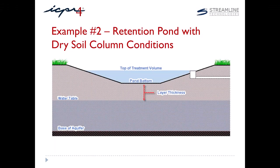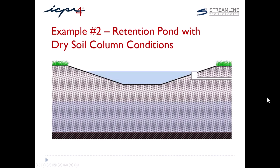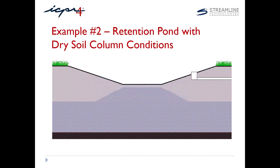Example 2 includes a pond located in a region where the review agency allows a dry soil column assumption. In this case, the percolation link calculations begin with unsaturated vertical flow through the dry soil column. The engineer should enter a layer thickness equal to the pond bottom elevation minus the ambient water table elevation. This animation illustrates the pond drawdown beginning with unsaturated vertical flow. Once the wetting front reaches the ambient water table, you'll see the horizontal flow begin.